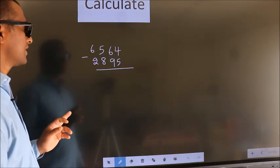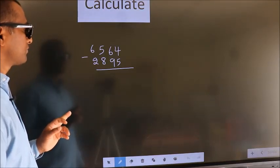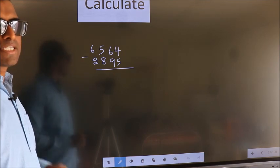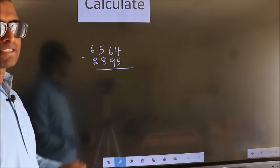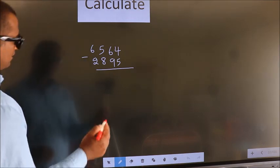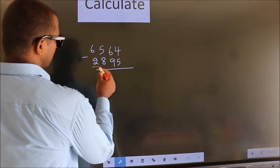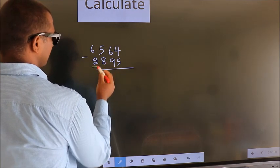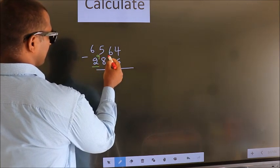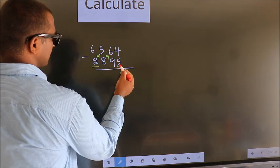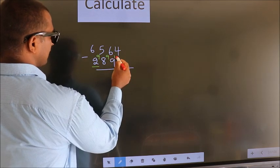Calculate 6564 minus 2895. How do we subtract it faster? See, we should leave the first digit, and here you write 9, here 9, and the last digit you write 10.